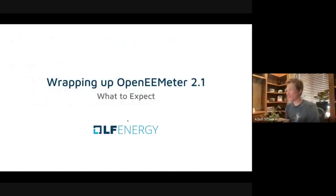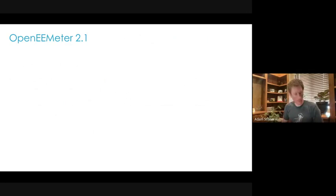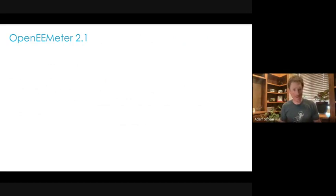Wrapping up Open E-Meter 2.1 — by the way, we should probably have a slide on this, but let me just mention to the group: we would like to change the nomenclature around these models away from CalTrack and more toward Open E-Meter. The reason is we've received feedback from clients outside of California who say it kind of rubs them the wrong way that the whole model is deemed a California model.